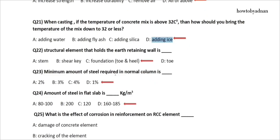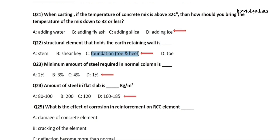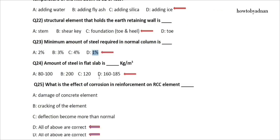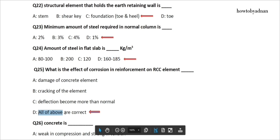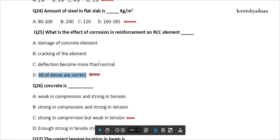Question 22: The structural element that holds the earth retaining wall is? The answer is option C: Foundation toe and heel. Question 23: The minimum amount of steel required in a normal column is? The answer is option D: 1%. Question 24: The amount of steel in a flat slab is how many kg per cubic meter? The answer is option D: 16,185. Question 25: What is the effect of corrosion in reinforcement on an RCC element? The answer is option D: All of the above are correct.